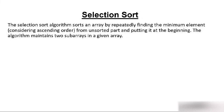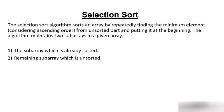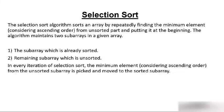In an unsorted array, we find the minimum element and put it at the first position. We again start the same procedure from the second position, find the minimum in the remaining list, and put it in the second position, repeating this process. The algorithm maintains two sub-arrays: one which is already sorted, and one remaining sub-array which is unsorted. In every iteration, the minimum element from the unsorted array is picked and moved to the sorted array.